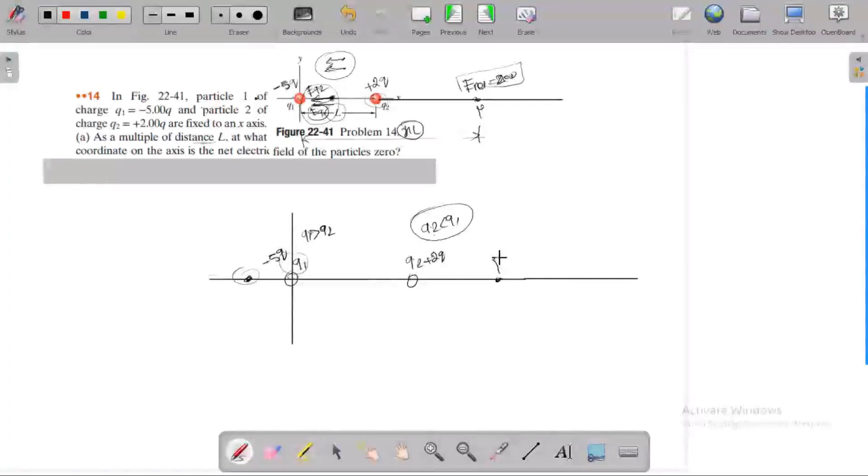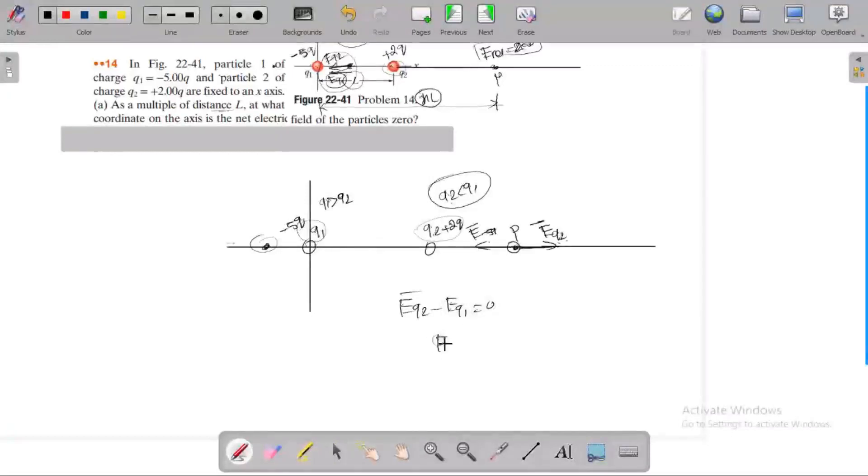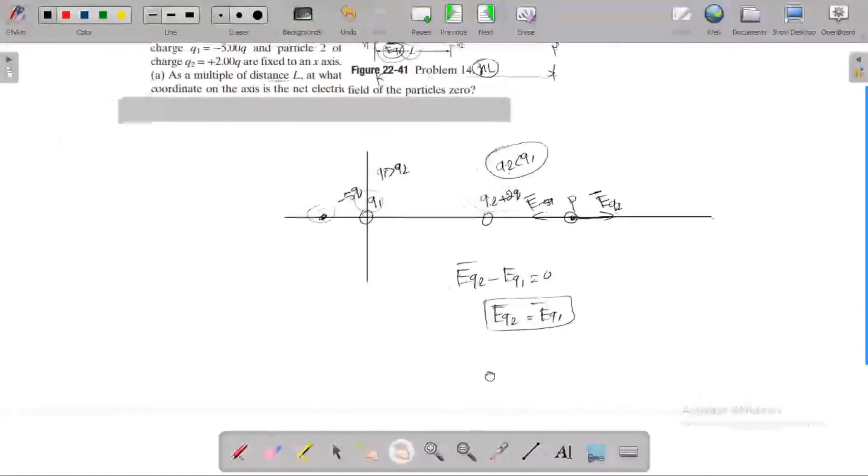I choose point P. At point P, the electric field caused by particle 2 is in the right-hand direction. The electric field line is away from the positive charge and towards the negative charge. For them to equal zero, E_Q2 minus E_Q1 equals zero, so E_Q2 equals E_Q1.